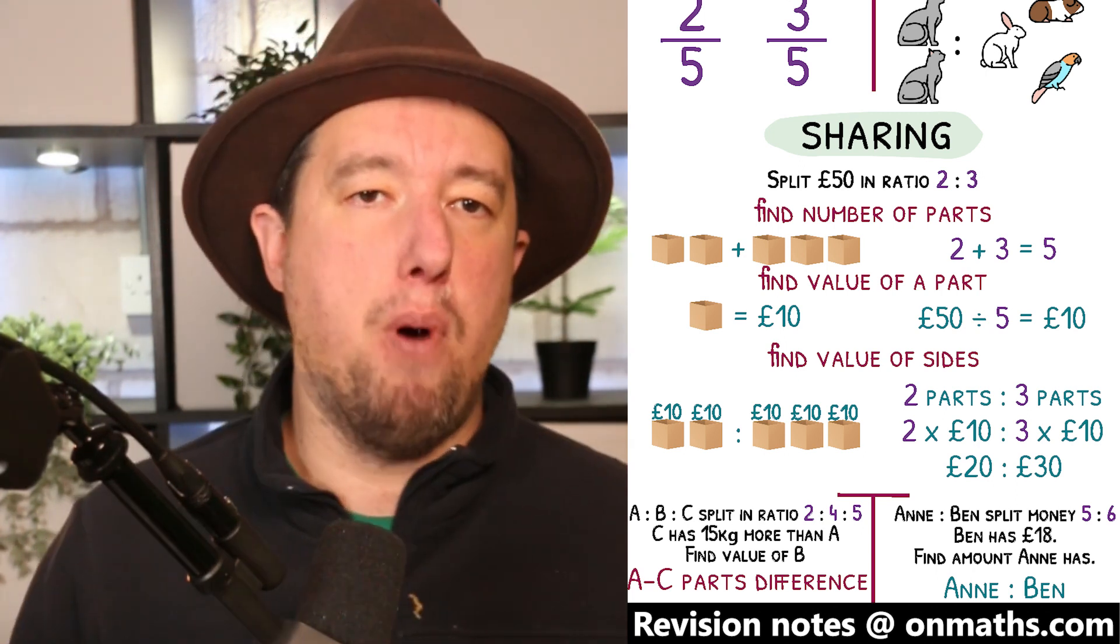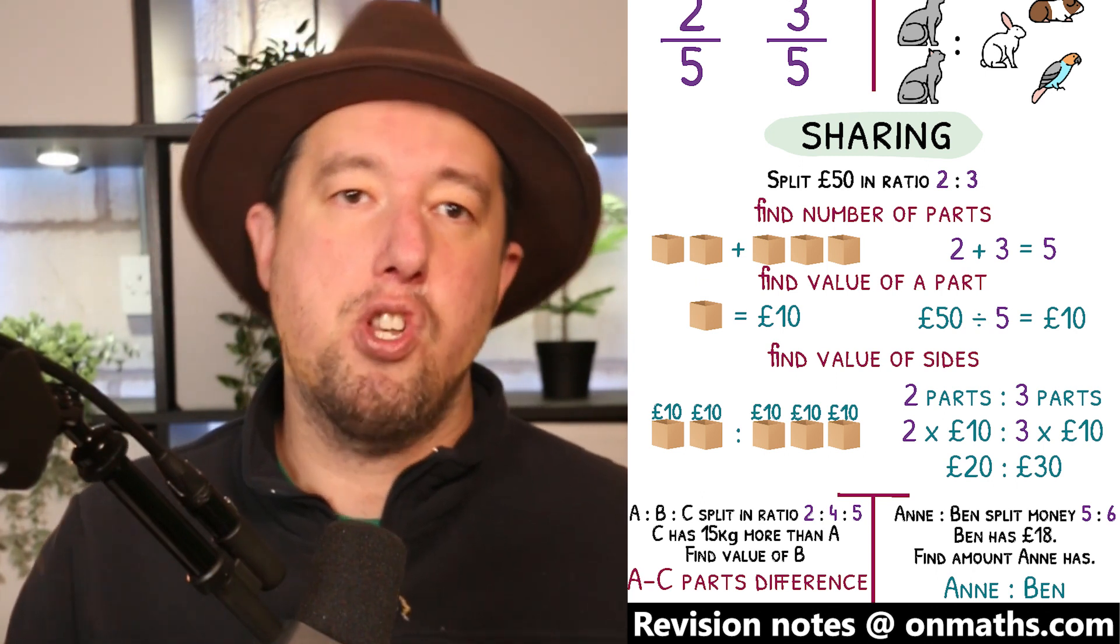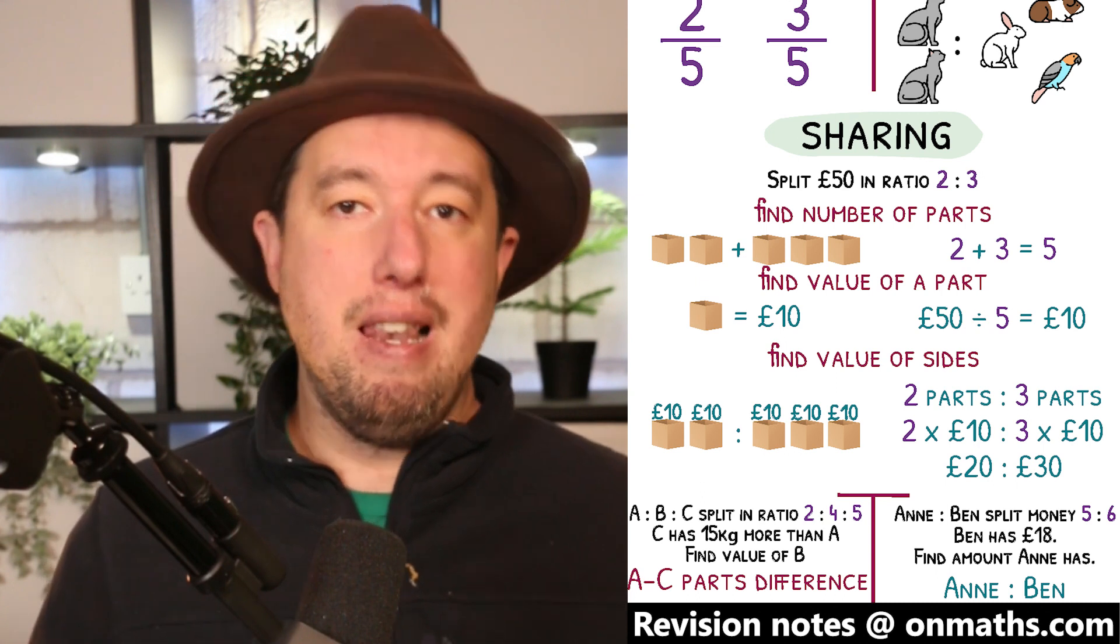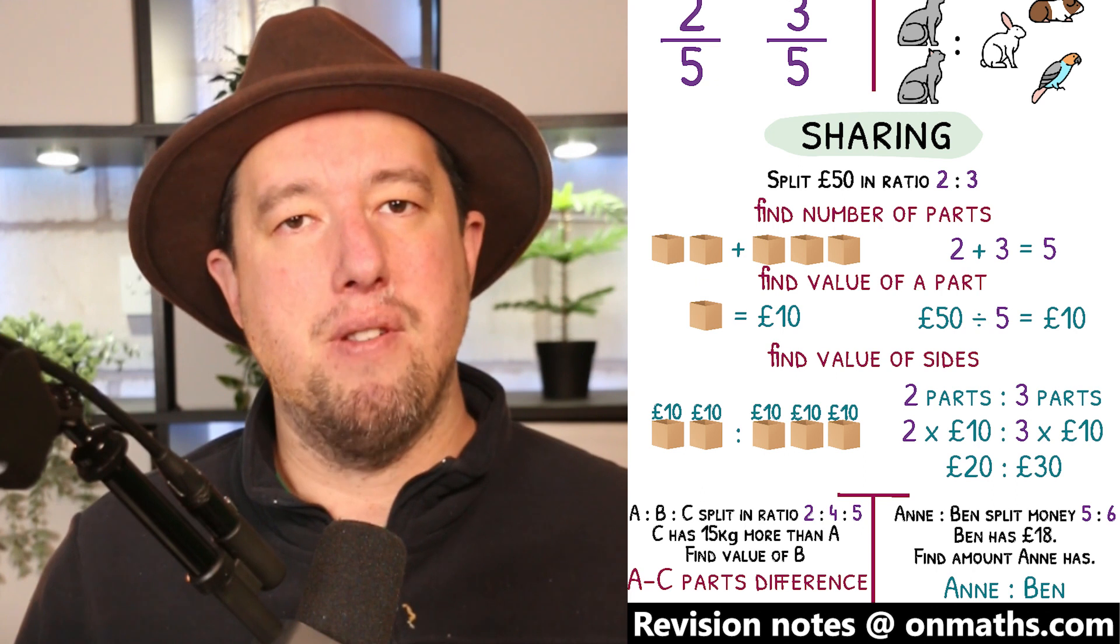but each box must contain the same amount. To calculate the amount in each box, we divide 50 by 5, giving us £10 to put in each box. Finally, let's put the money in each box. We have 2 boxes on the left, each with £10 in,